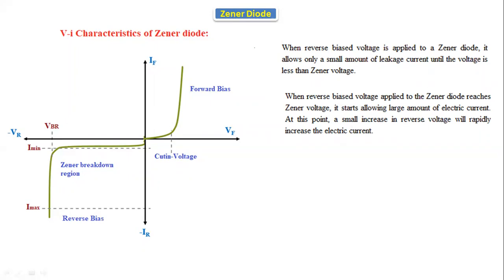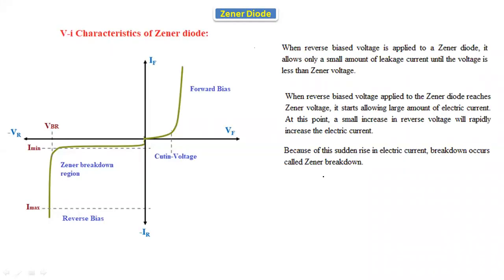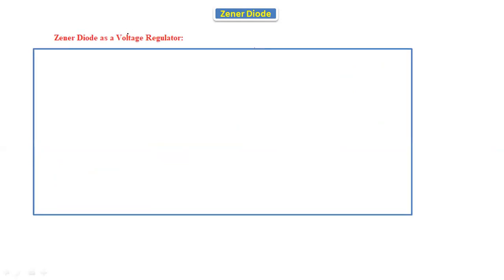A small increase in the reverse voltage will rapidly increase the electric current. There is no large variation in the voltage — the voltage is almost constant — but there is large variation in the current. Because of this sudden rise in electric current, breakdown occurs; this is called Zener breakdown. This breakdown region is called the reverse breakdown region.